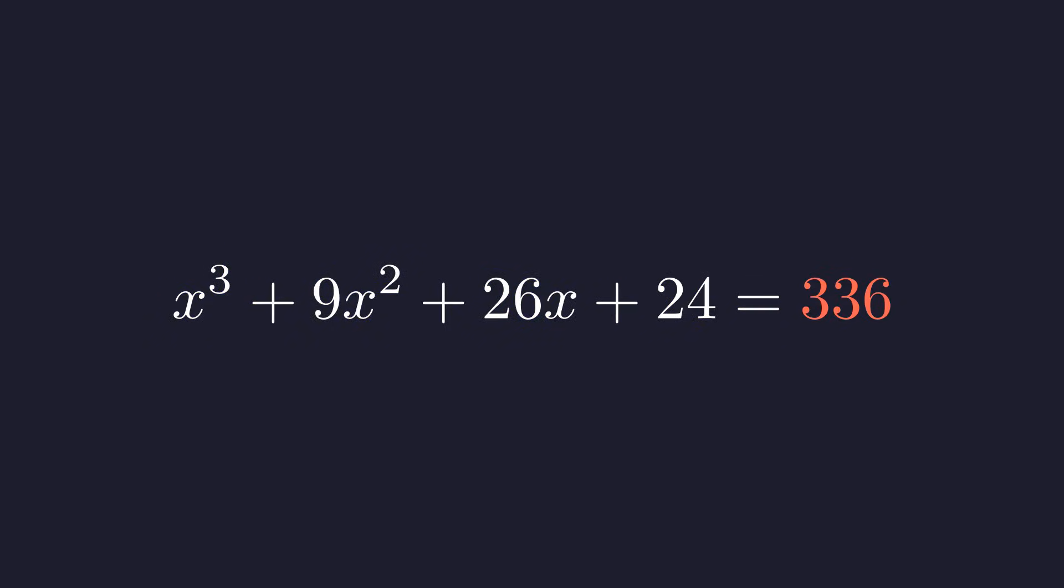To find the roots of this polynomial we first need to set the equation to 0. Subtracting 336 from both sides leaves us with this cubic. Now you could try to solve this using something like the rational root theorem, which would mean testing all the integer factors of 312. That sounds tedious. This is the brute force trap.